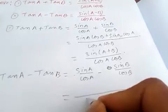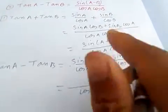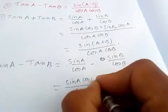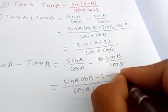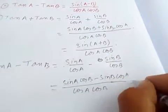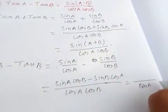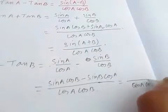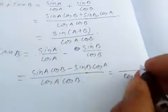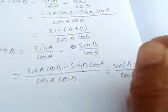we get sin(a)·cos(b) - sin(b)·cos(a) over cos(a)·cos(b), and this is just sin(a-b) / (cos(a)·cos(b)).